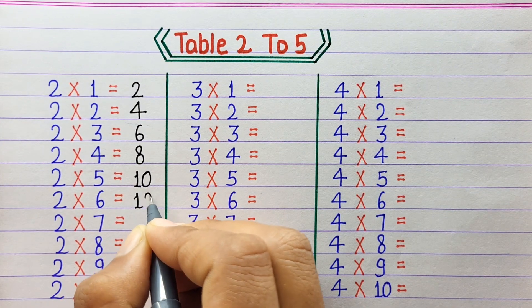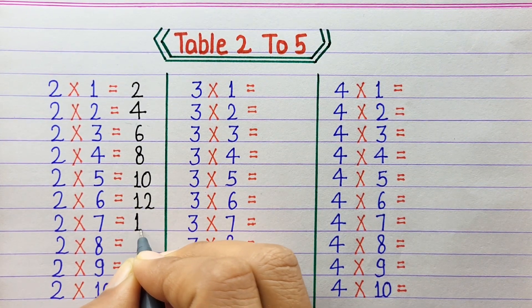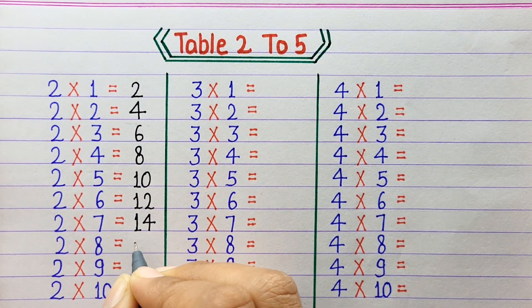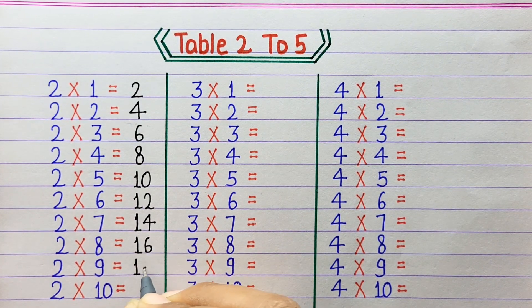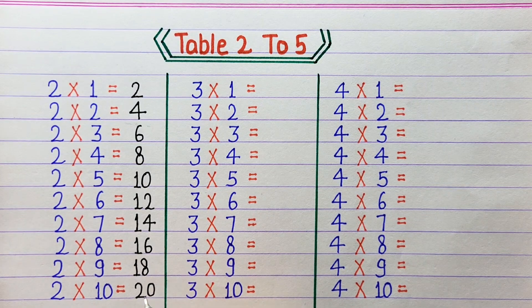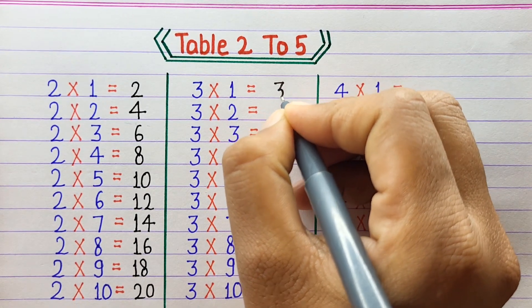2 times 6 is 12, 2 times 7 is 14, 2 times 8 is 16, 2 times 9 is 18, 2 times 10 is 20. 3 times 1 is 3.